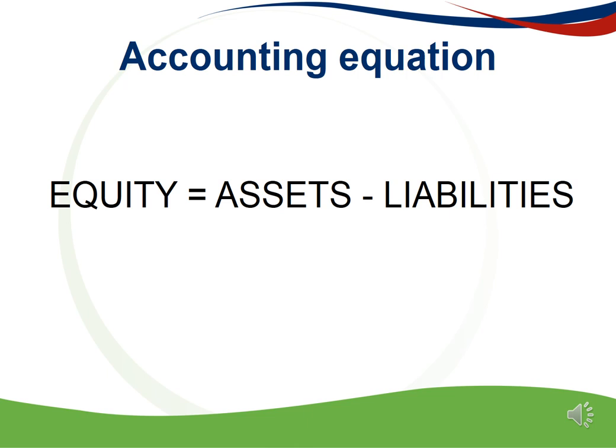If we apply this to our example of a capital contribution, it means that our equity will increase by 100,000 Rand. In order to keep the equation in balance, we will need another entry. Since we receive the 100,000 Rand, our bank account will increase. Bank is an asset, and therefore if we increase equity by 100,000 Rand on the one side of the equation, assets on the other side of the equation will increase and it will stay in balance.